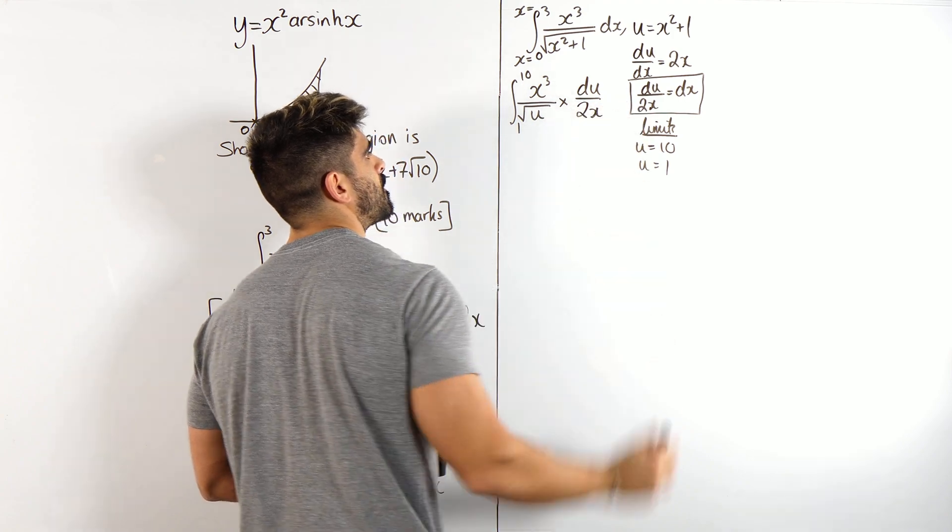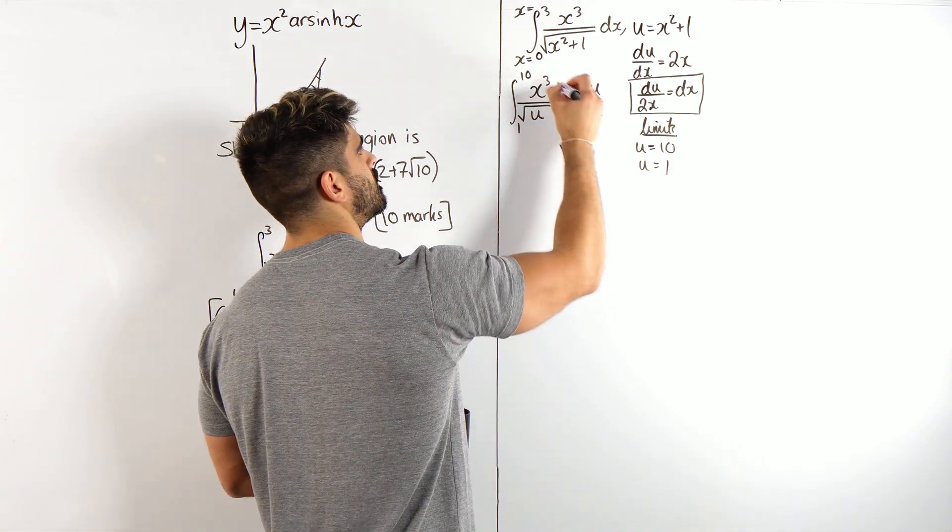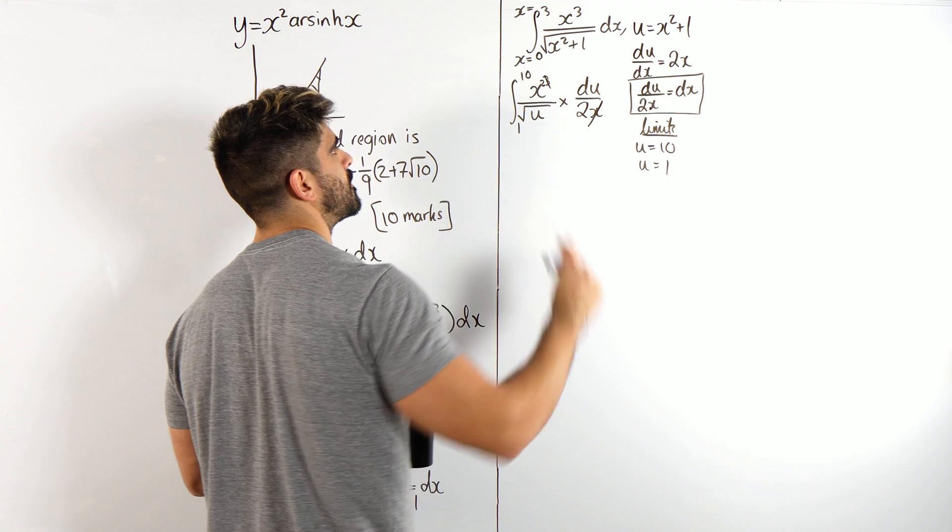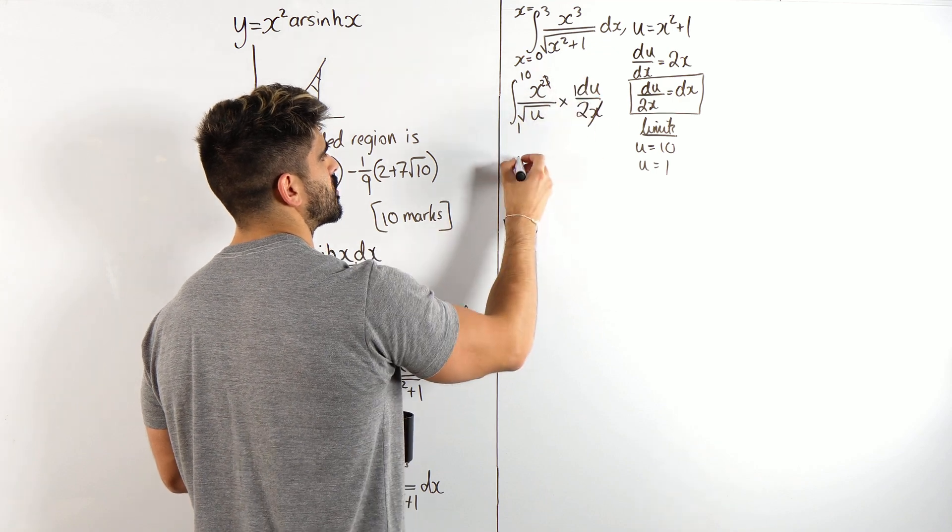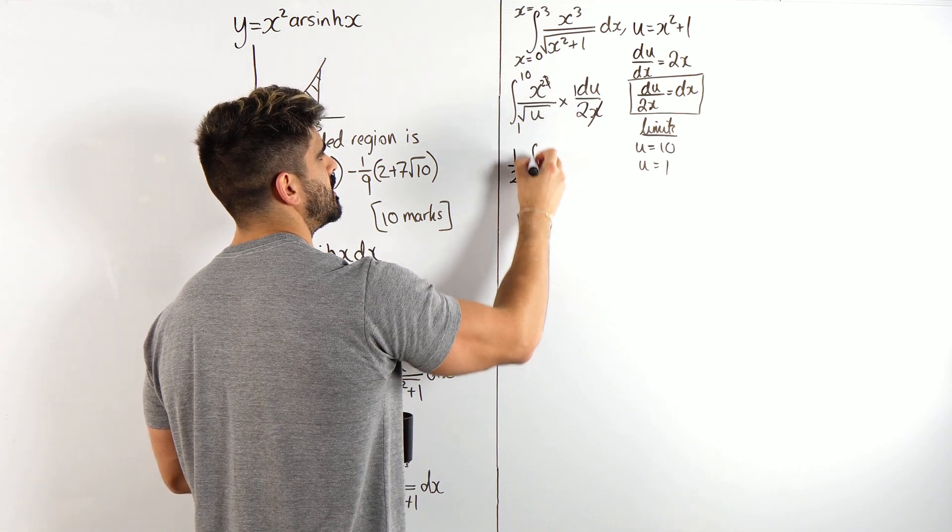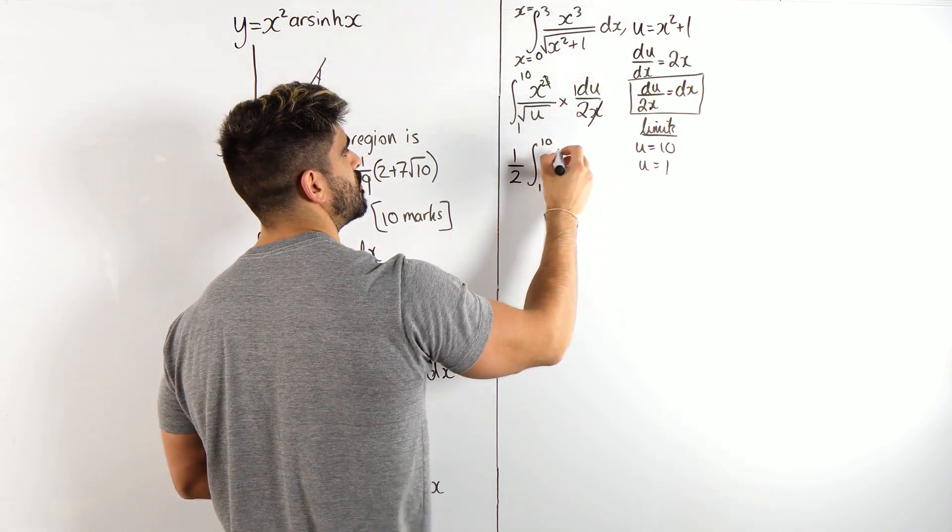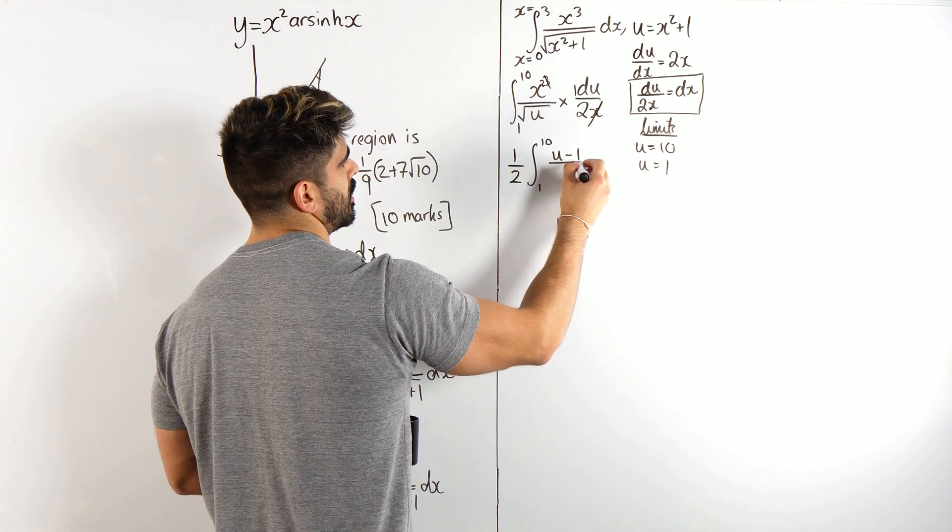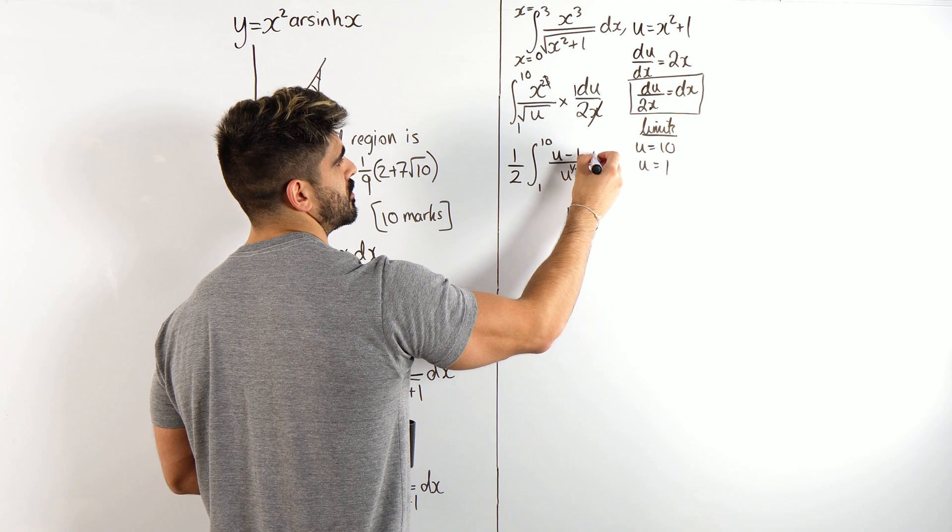Which the 2x is going to cancel with the x cubed, to make it x squared, and that 2 in the denominator is a half, right? I can take it out. So, I get a half integral between 1 and 10, x squared, now x squared is u minus 1, over root u. I'm actually going to write that as u to the half, because of what I'm going to do next.